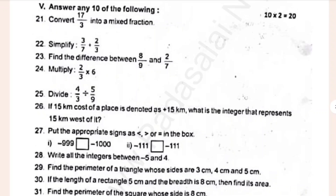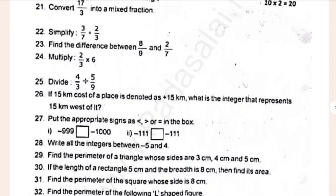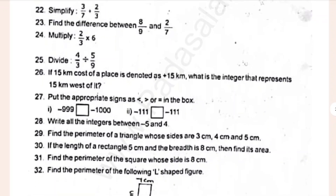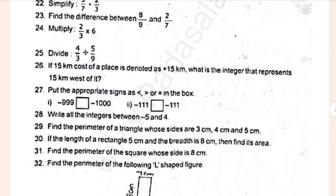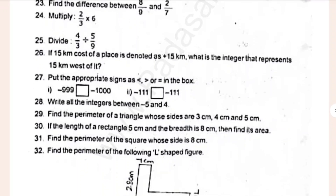Convert 17 divided by 3 into a mixed fraction. Simplify 3 divided by 7 plus 2 divided by 3. Find the difference between 8 divided by 9 and 2 divided by 7. Multiply section.